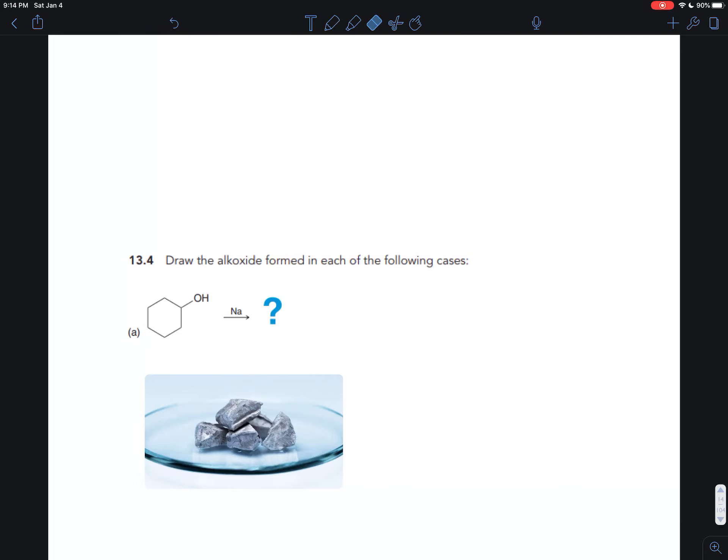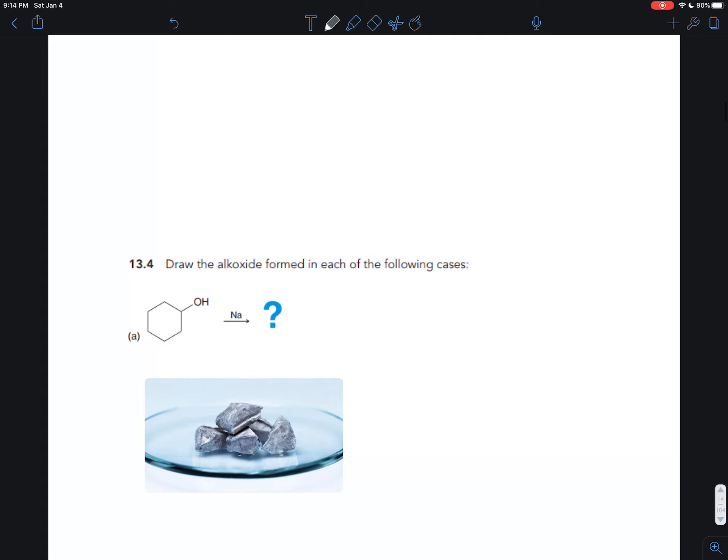Exercise 13.4 is asking you to draw the alkoxide formed in a few reactions. Now the idea here is, once you have an alcohol, what can you do with it?